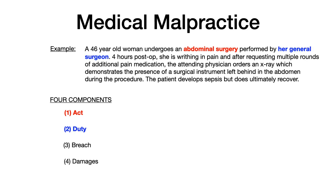Number two — duty. The duty is established because it's her general surgeon, so there is clearly a doctor-patient relationship. On USMLE or Comlex, this duty will often be implied because the question will tell you that a patient sees a doctor for some reason — it doesn't need to spell out consent forms or a six-month relationship. It's implying there's a doctor-patient relationship, so the duty component is present.